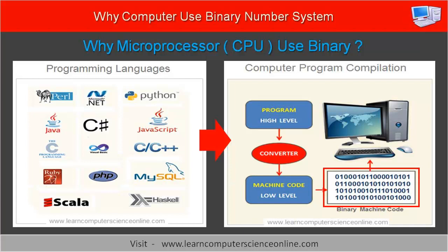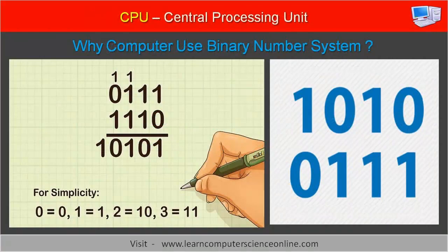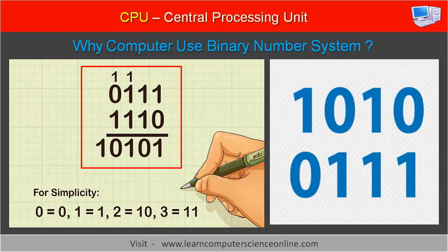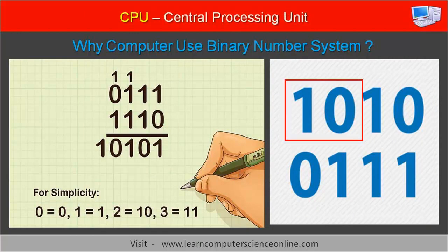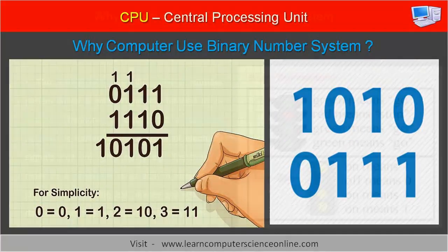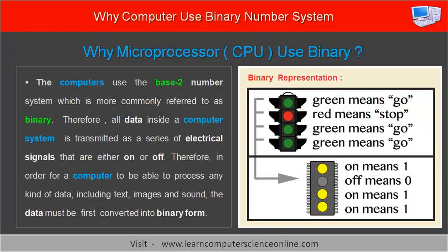Let us now discuss what the binary number system is. In mathematics, a binary number is used to represent any number using only two numerical digits — zero and one. Therefore, the binary number system is said to be a base-two number system. The binary number system is extensively used in the field of digital electronics, mainly due to the ease of its straightforward implementation.